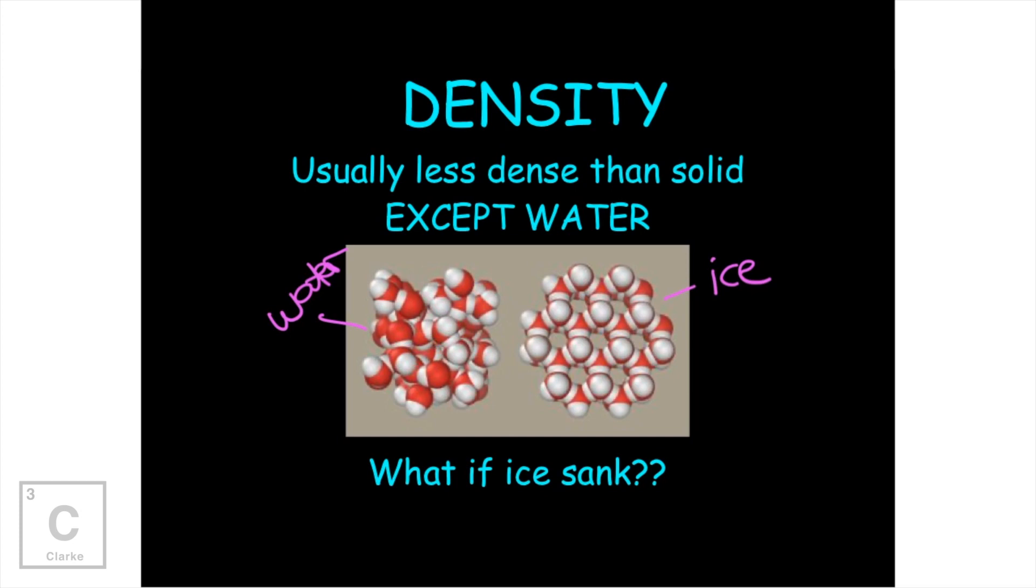When you freeze them and make ice, it makes this very geometric shape. And you see these blank spaces in between? They fill with air. And when they fill with air, it causes ice to be less dense.